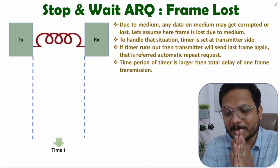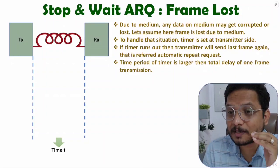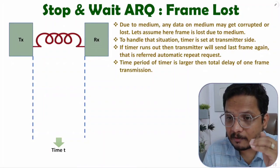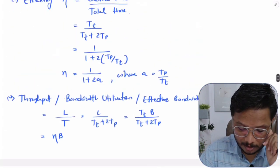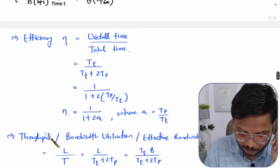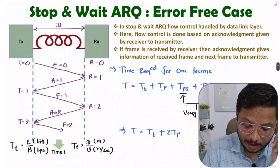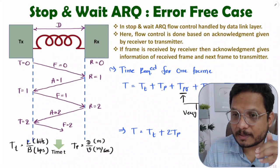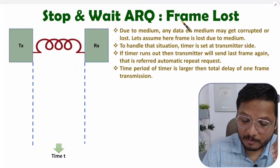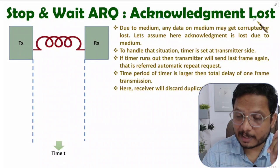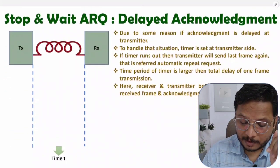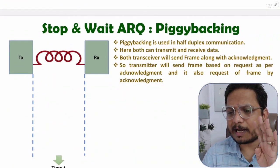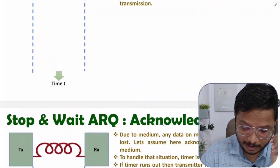Hello friends, welcome to Engineering Funda family. In this video I am going to explain some special cases of Stop and Wait ARQ protocol. In my previous video I explained the error-free case, deriving parameters like efficiency and throughput. Now I will explain four special cases: what happens when a frame is lost, when an acknowledgement is lost, when a delayed acknowledgement is received, and the case of piggybacking.